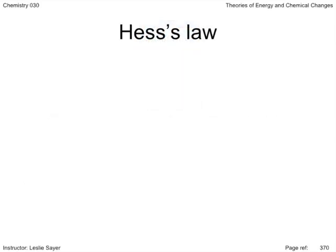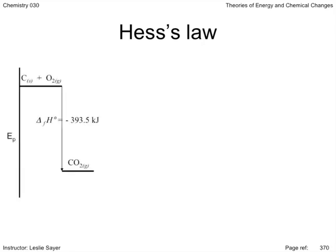Hess's Law. Before I get into the details of Hess's Law, I want you to consider something. This is a potential energy diagram showing the change in enthalpy during the formation of carbon dioxide from its elements. For every mole of carbon dioxide produced, 393.5 kilojoules of energy is released.